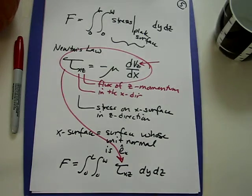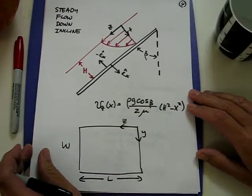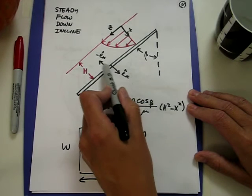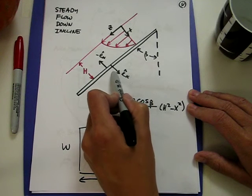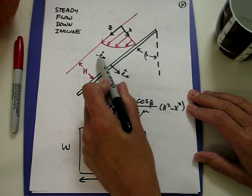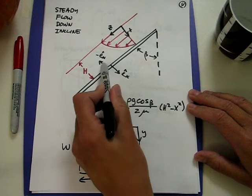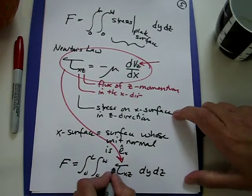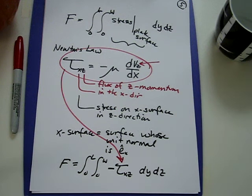But as I pointed out last time, we actually are not interested in the stress on an x surface, but rather on a surface whose unit normal is minus x. So we need to in fact include a negative sign here to make sure that we're correctly talking about the force on the minus x surface.